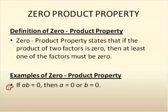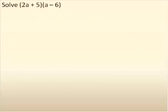So, let's take a look at how we use the property. Solve 2 quantity 2a plus 5 times quantity a minus 6 equal to zero. We need to solve that.